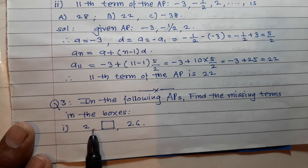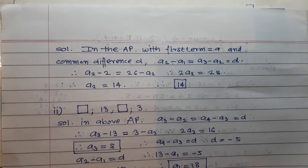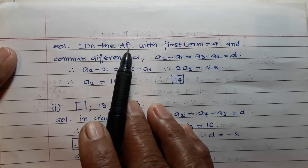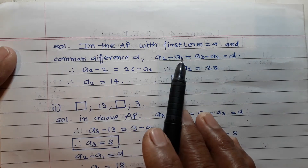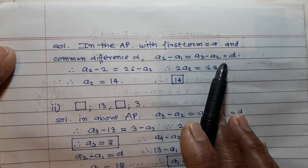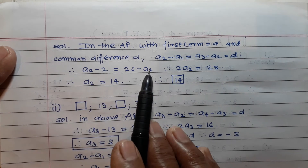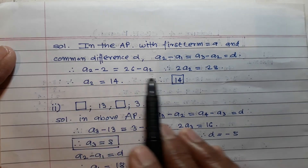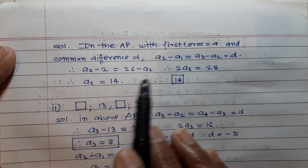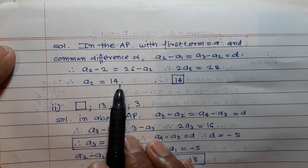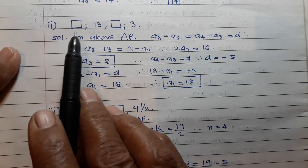Solution: in an AP, a₂ - a₁ = a₃ - a₂ = d. Since the terms are 2, a₂, 26, we have 2 × a₂ = 2 + 26 = 28, so a₂ = 14. The missing box contains 14.